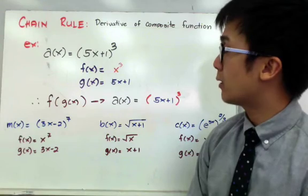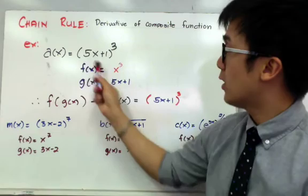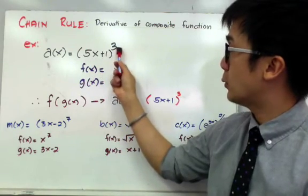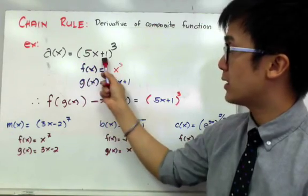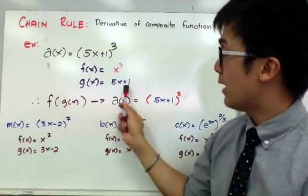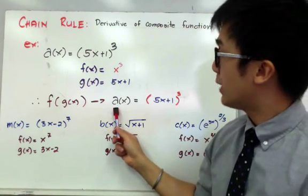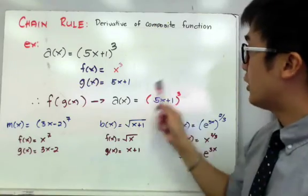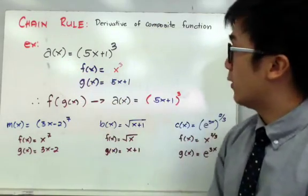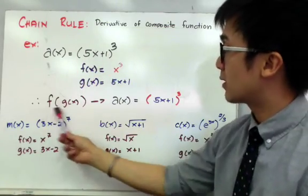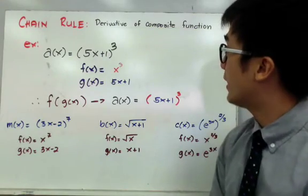We can also see a composite function in a(x), wherein f(x) will be the parenthesis cubed, represented by x cubed, and g(x) will be the function inside the parenthesis, which is 5x plus 1. The composite function f(g(x)), which is simply a(x), can be written as (5x+1) raised to the third power. This is why the chain rule is the rule we use in finding the derivative of a composite function.